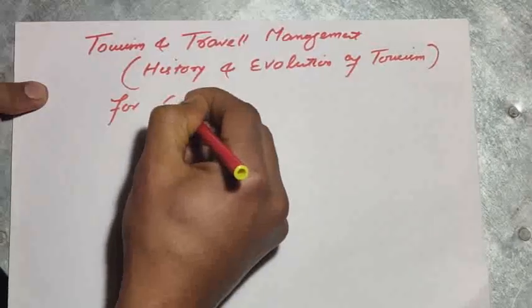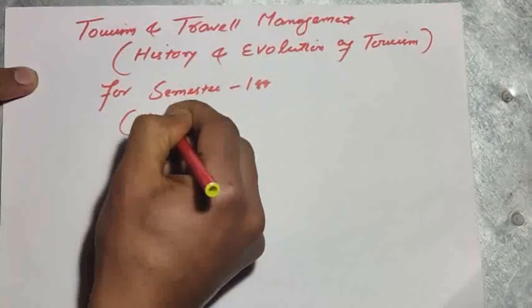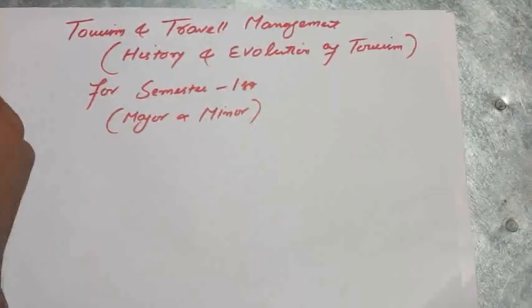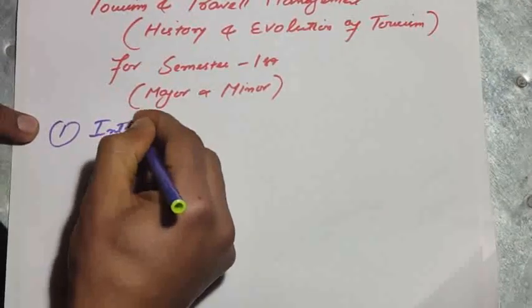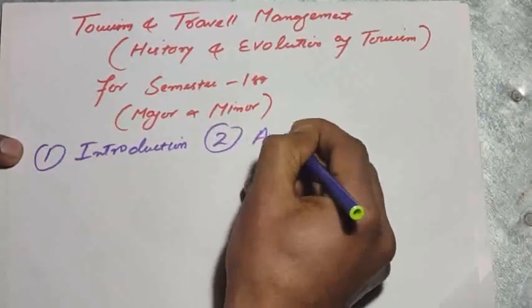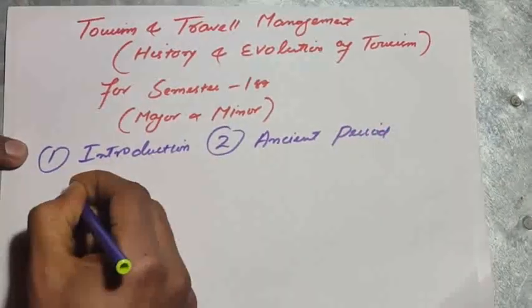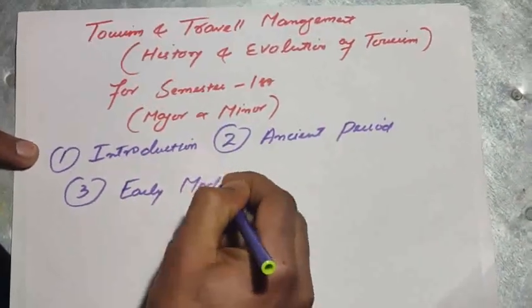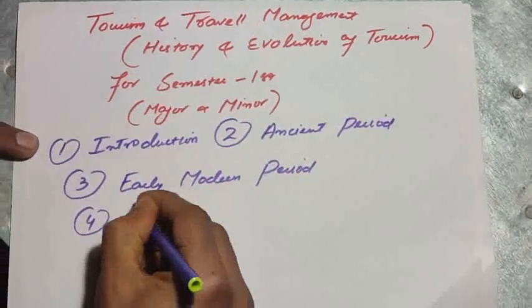History and Evolution of Tourism for semester first, major and minor. You have four units that include: first unit is Introduction, second one is Ancient Period, third one is Early Modern Period, and last is Late Modern Period.